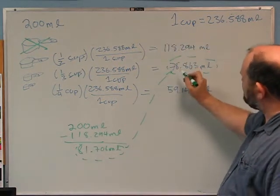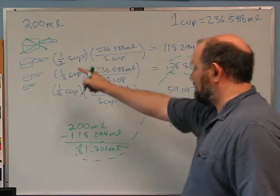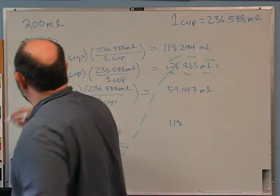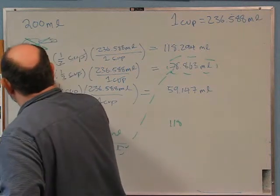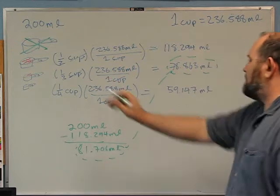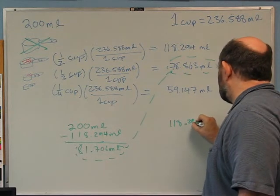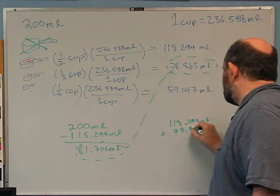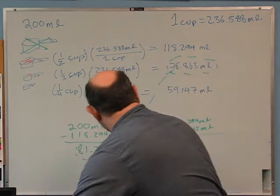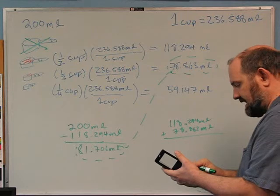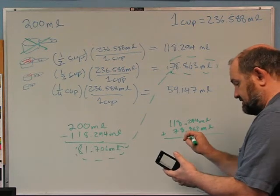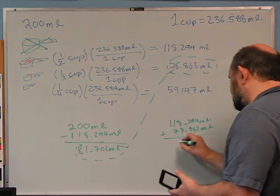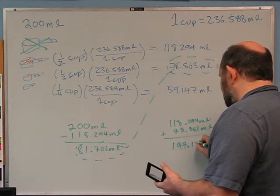This is so close to that — if I took the half cup, filled it up with milk at 118.294 milliliters, and then added the third cup at 78.862 milliliters, I'm going to get — let me do this on my calculator — I get 197.156 milliliters.